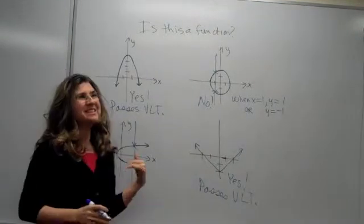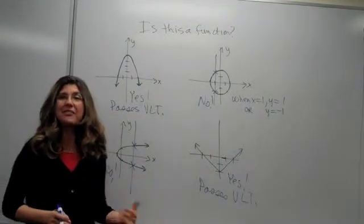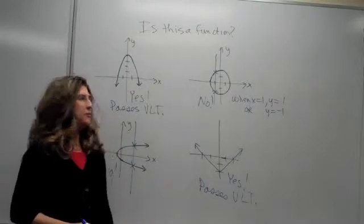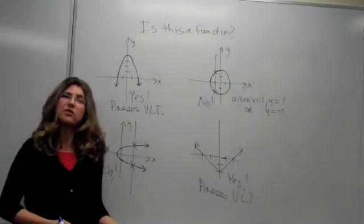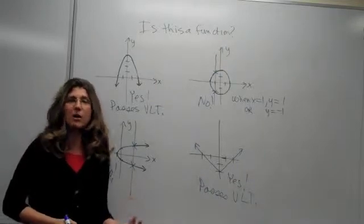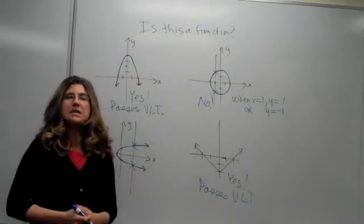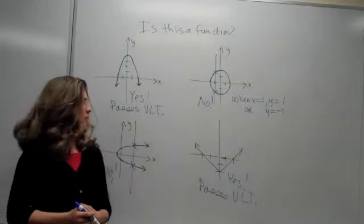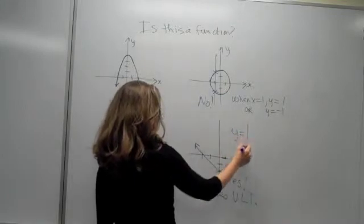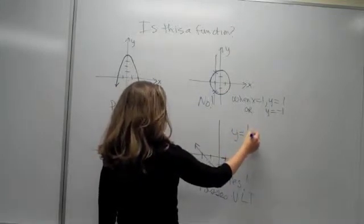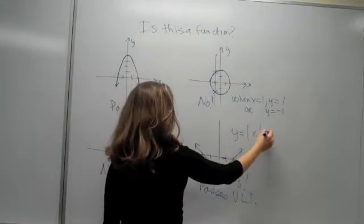Now, what if instead of having the graph we had the equation of each of these functions? Well, if you have an equation, then you have to be able to tell whether the equation represents a function or a relation. Sometimes it's easy to tell. So, for example, this would be the graph of y equals the absolute value of x minus 2.